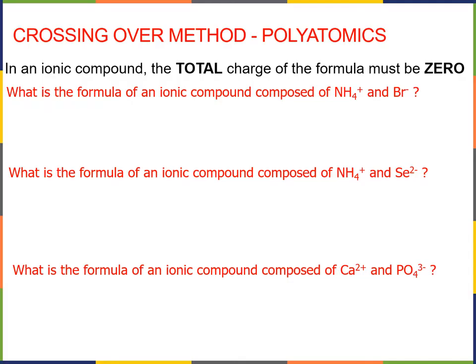Okay, now let's do a few more examples, and let's kick it up a notch, shall we? Let's look at the crossing over method using polyatomic ions. The principle with polyatomic ions is the same. In an ionic compound, the total charge of the formula must be zero. Now, when we're looking at polyatomics, we need to remember that the polyatomic ion, something like ammonium or nitrate or sulfate, these ions behave as a unit. We don't break them apart in any way. Sulfate remains a sulfate when we're using the crossing over method.